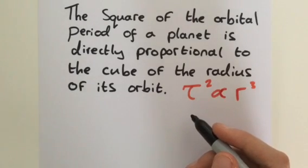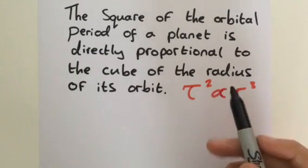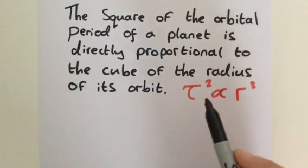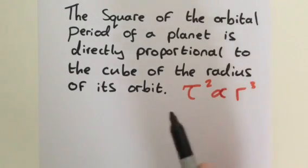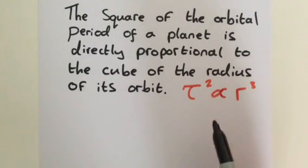Hello. In this video, we're going to prove Kepler's third law of planetary motion. The law states that the square of the orbital period of a planet is directly proportional to the cube of the radius of its orbit.